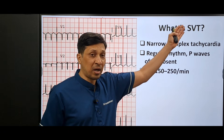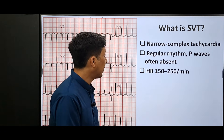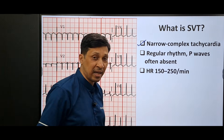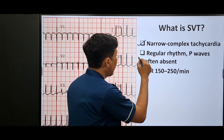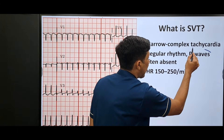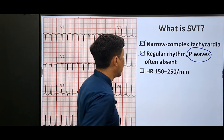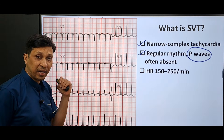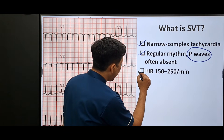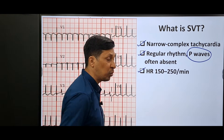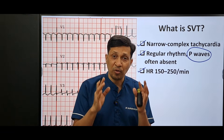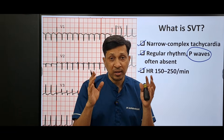So what is supraventricular tachycardia? It is a narrow complex tachycardia with a regular rhythm, and often the P waves are absent. This is the ECG of a supraventricular tachycardia, and this tachycardia has a rate of 150 to 250. So this is the morphology of supraventricular tachycardia.